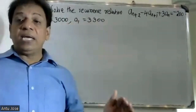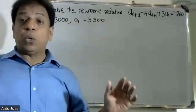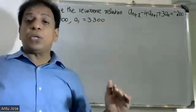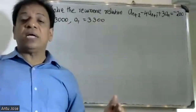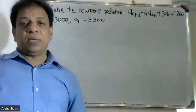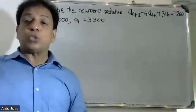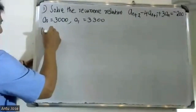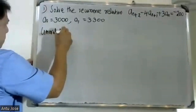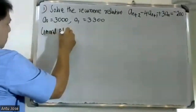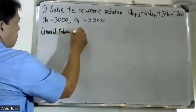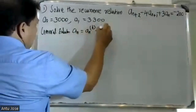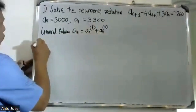This is a second order linear recurrence relation — non-homogeneous, since the right-hand side is not equal to zero. The solution is a(n) equals a(n) homogeneous plus a(n) particular.